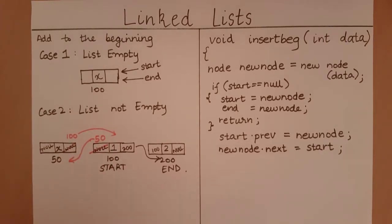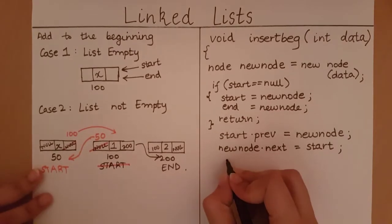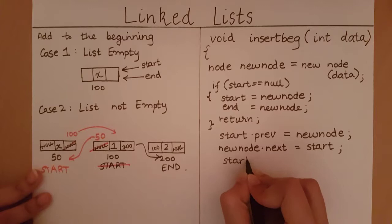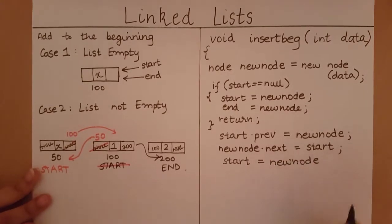Now that we have set the pointers, the next thing we must do is we must update the start. Our linked list no longer starts from this element. This is no longer the starting node because there exists a node which precedes it. So I am going to update the start. This is no longer my start. Instead, my new start is going to be the new node. So let me write that. I want to reset my start to equal to the new node.